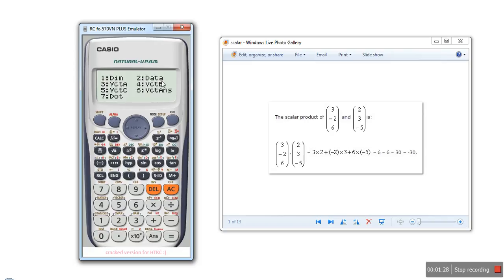Here it is showing the options available in vector mode. We want to insert second vector. We need to select data vector b. Now we are going to enter vector b.